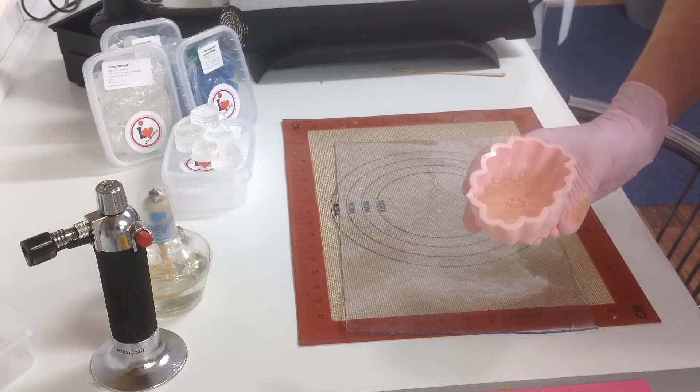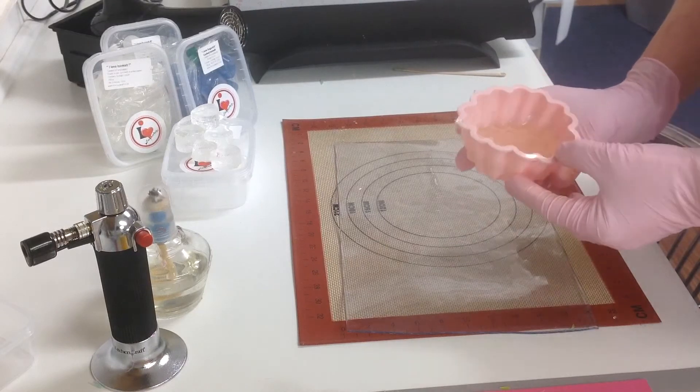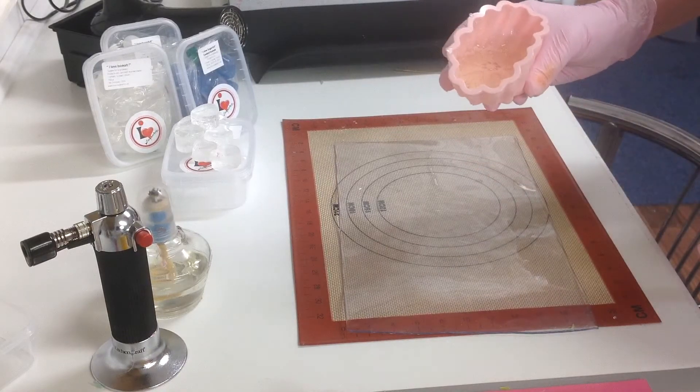I've got some isomalt which is artificial sugar. It's a clear isomalt melted in a silicone pot.